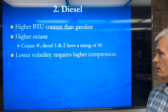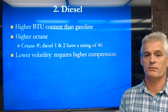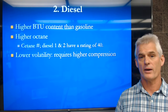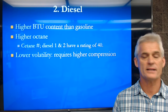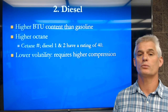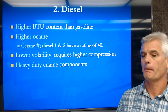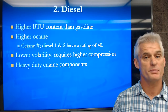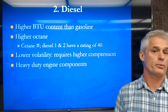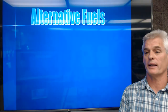Diesel has lower volatility — it's not very volatile and doesn't burn as easily. Therefore it requires much higher compression. Whereas a gasoline engine runs 9 to 1 or 10 to 1, a diesel engine runs 20 to 1 or 22 to 1. We have to have heavy-duty components because of all the pressure from that high compression ratio, and typically we'll have three or even four compression rings as opposed to two on a gasoline piston.